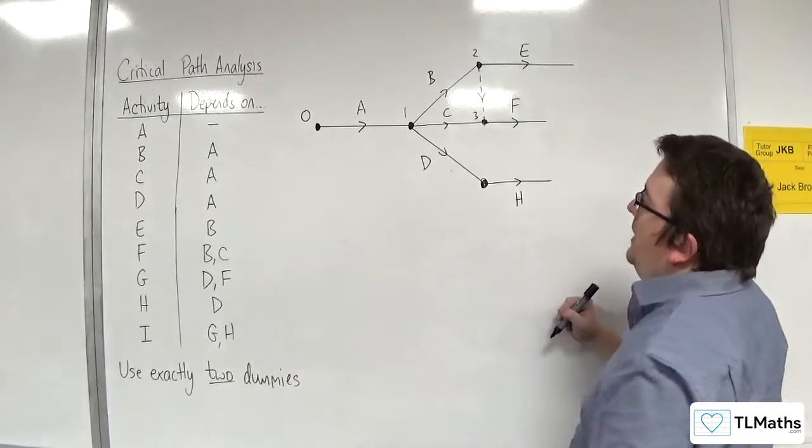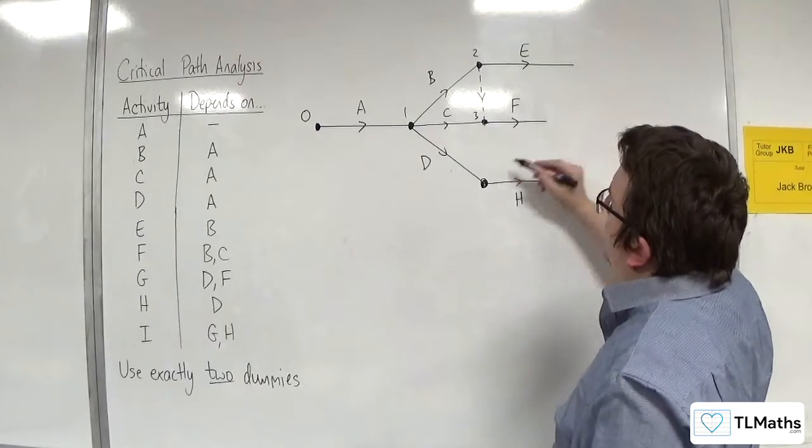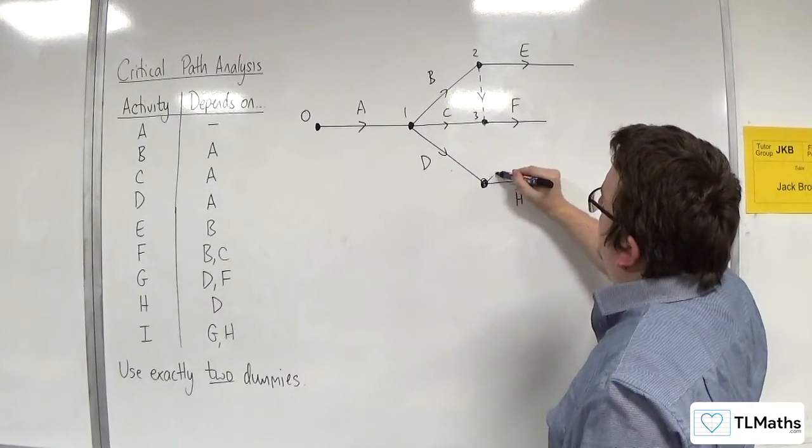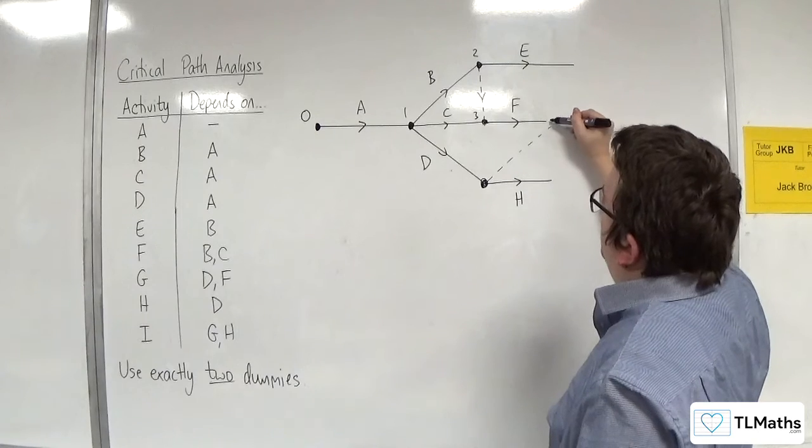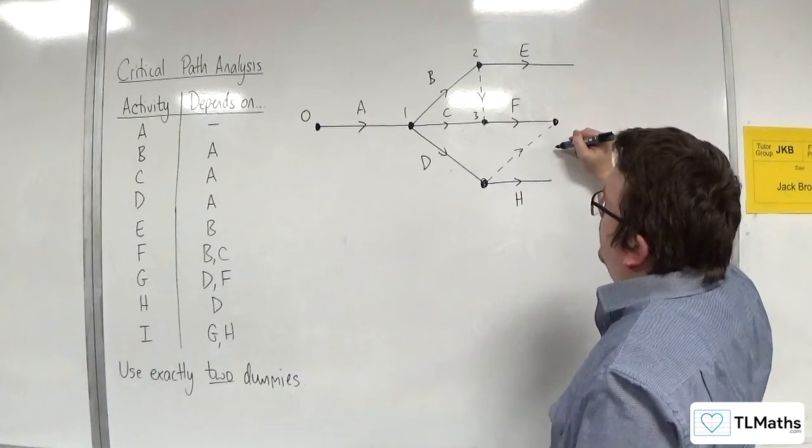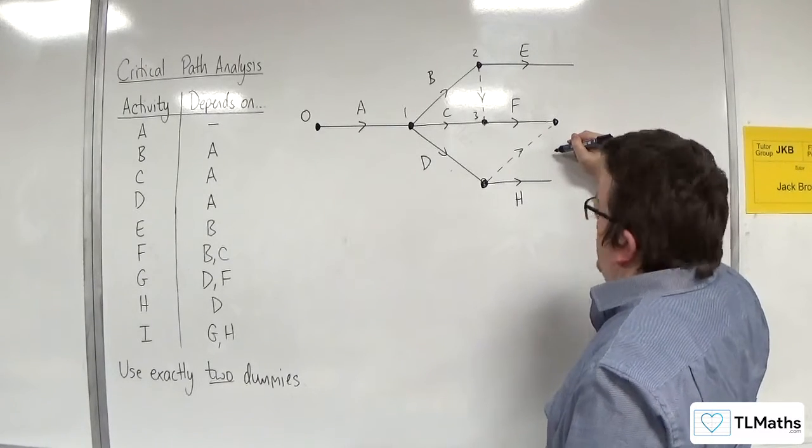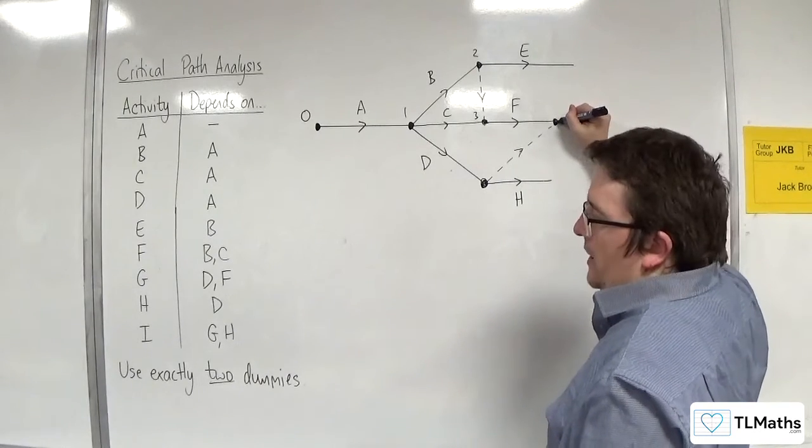G relies on D and F. Now, I can have that happen if I put in my second dummy here. So, here's the next dummy, the second dummy that I needed. So, that G can come off this node here.